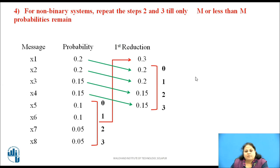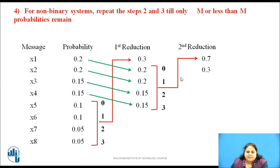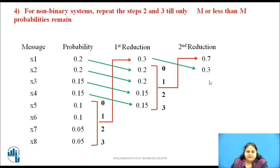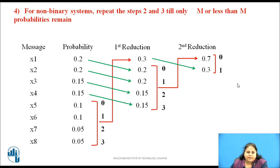The sum of probabilities of these grouped terms comes to be 0.7. As it is greater than 0.3, it is placed at the top position and 0.3 is shifted next. After the second reduction, only two terms remain. No further reduction is required, so the symbols are assigned to those two terms.